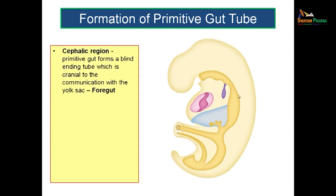At the cephalic region you can see that the primitive gut actually forms a blind end which is in communication with the yolk sac. The cephalic region — the primitive gut forms a blind ending tube, which is the cranial end, and it is in communication with the yolk sac. This part is known as the foregut. So the primitive gut extends from the oral cavity to the anal canal, and the cephalic end of this region is known as the foregut.